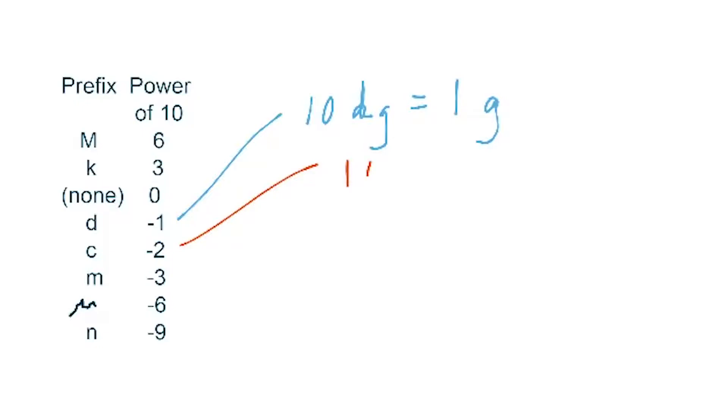There are 100 centigrams in a gram, just as there are 100 years in a century. There are 1,000 milligrams in a gram, just as there are 1,000 years in a millennium.